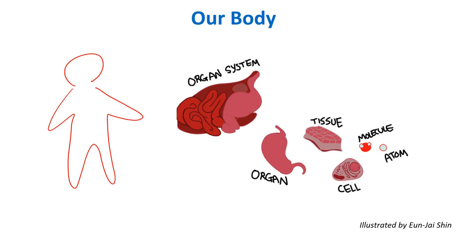Each cell is made of different types of molecules, such as water, DNA, and protein. And each molecule is made of different types of atoms, mostly hydrogen, carbon, oxygen, and nitrogen. And these atoms are made of protons, neutrons, and electrons.